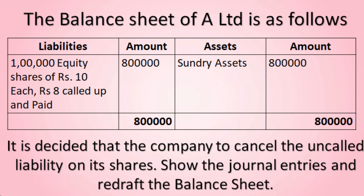On the liability side we are having 1 lakh equity shares of rupees 10 each, out of which rupees 8 is called up and paid. On the asset side we are having sundry assets of 8 lakh. It is decided that the company will cancel the uncalled liability on its shares — show the journal entries and redraft the balance sheet.